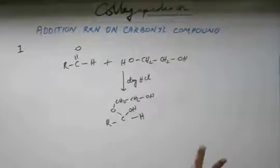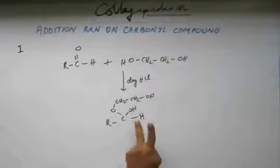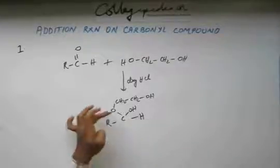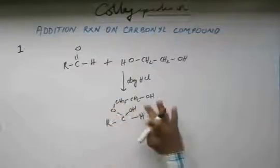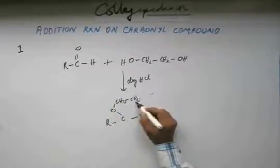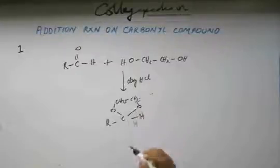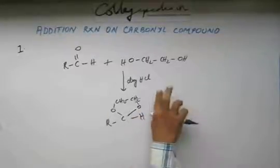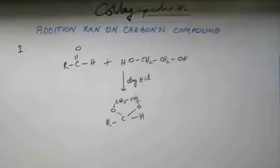In the next step what we used to do was add the next alcohol and remove this water. Because the next alcoholic group is in the same compound, what will happen is both ends will get attached to the same carbon and we have a cyclic ring like this.